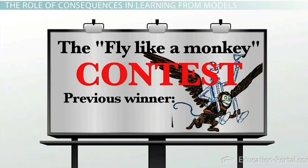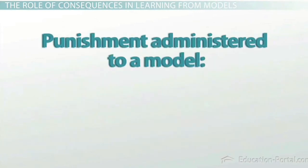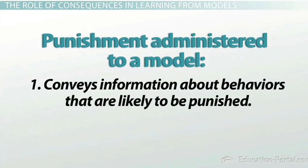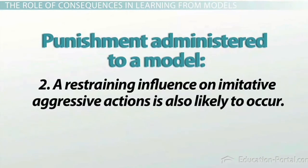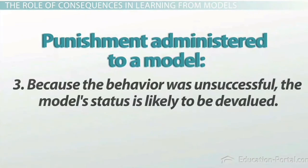Like vicarious reinforcement, punishment administered to a model tends to convey three primary effects. First, the outcome conveys information about behaviors that are likely to be punished and are therefore inappropriate. Second, a restraining influence on imitative aggressive action is also likely to occur. Third, because the behavior was unsuccessful, the model's status is likely to be devalued.